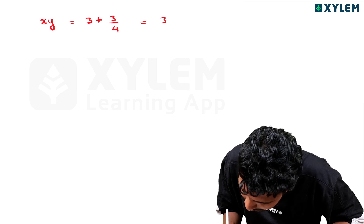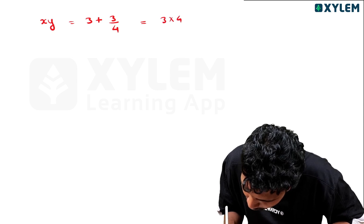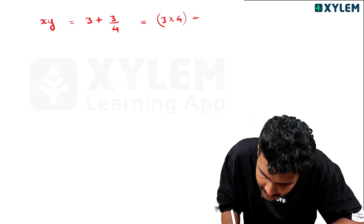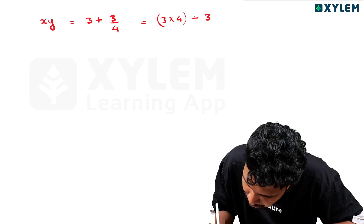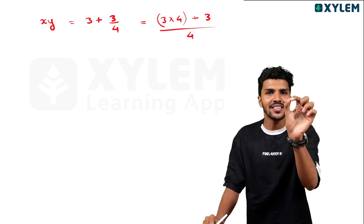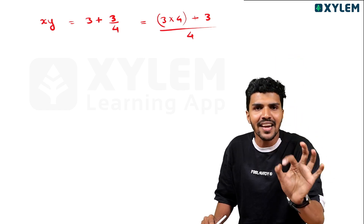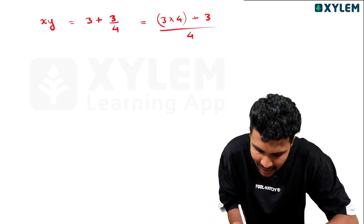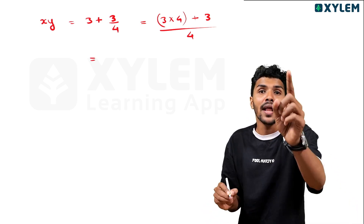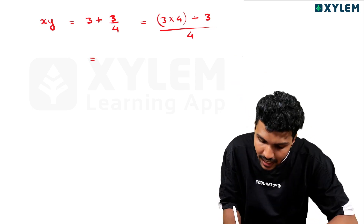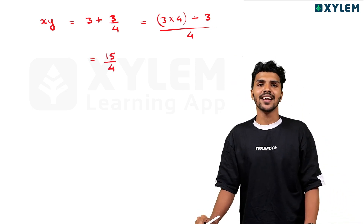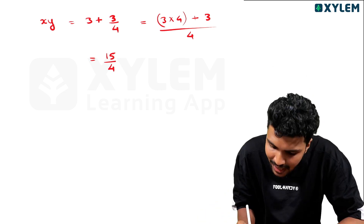How do you add 3 into 4? I will add 3 into 4, then divide by 4. So 3 into 4 plus 3 divided by 4: 3 into 4 equals 12, and 12 plus 3 is 15. So we get 15 by 4.